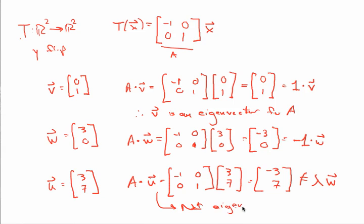So given a matrix — or equivalently a transformation — we can tell whether a given vector is an eigenvector simply by multiplying and seeing if we get a scalar multiple of what we started with. If we do, that vector is an eigenvector. If we don't, it isn't.